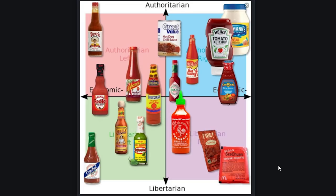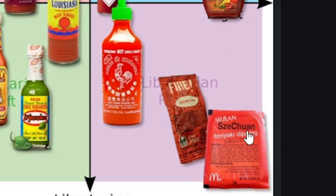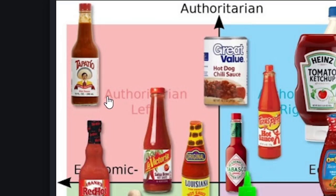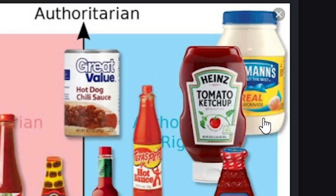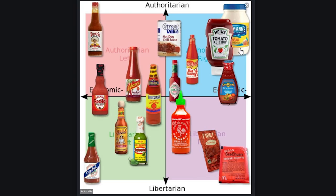Here's the hot sauce compass — I just like the Taco Bell hot sauce in the Libertarian right. I don't know why Tapatío's on this side, but all right. And then just over in this corner: mayonnaise. It's just a mayonnaise side — it just seems like those type of people.